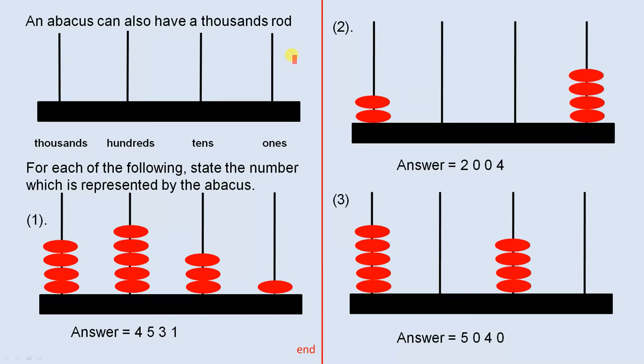An abacus can also have a thousands rod. So we've got ones, tens, hundreds, and thousands.